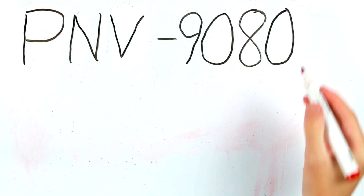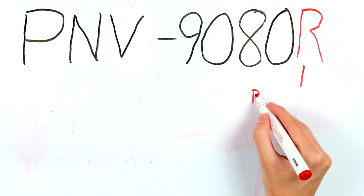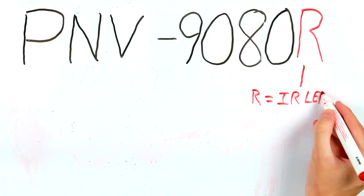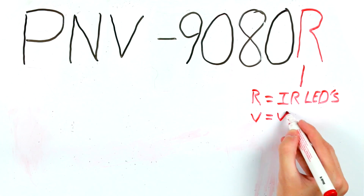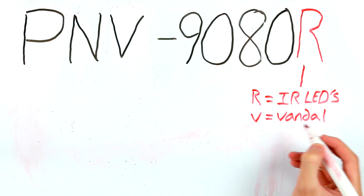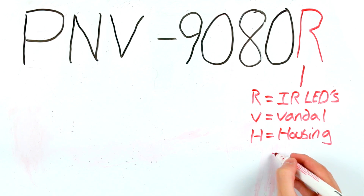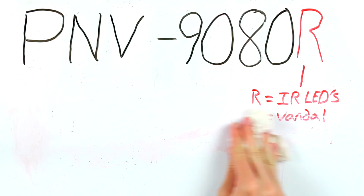The last part of the product code is a letter denoting the features of the camera. Some models won't have a letter at the end as they have no extra features, but many do. For example, if the code ends with an R that stands for IR LEDs; if it ends with a V that stands for vandal proof; if it ends with an H that means the camera comes with a housing, and so on.